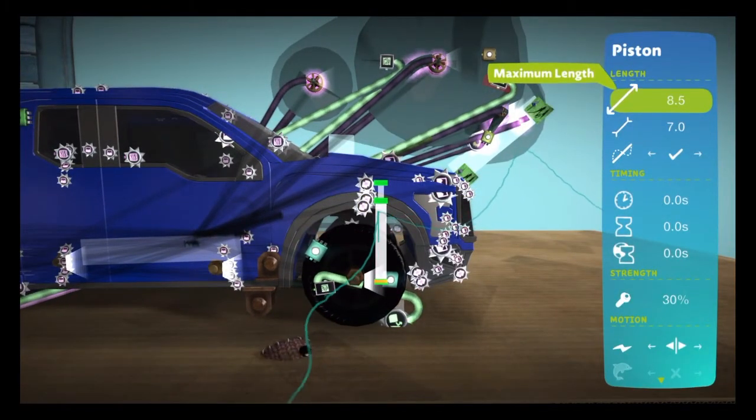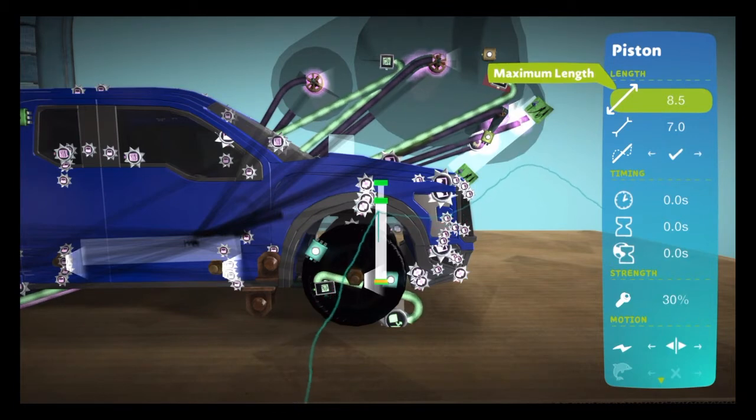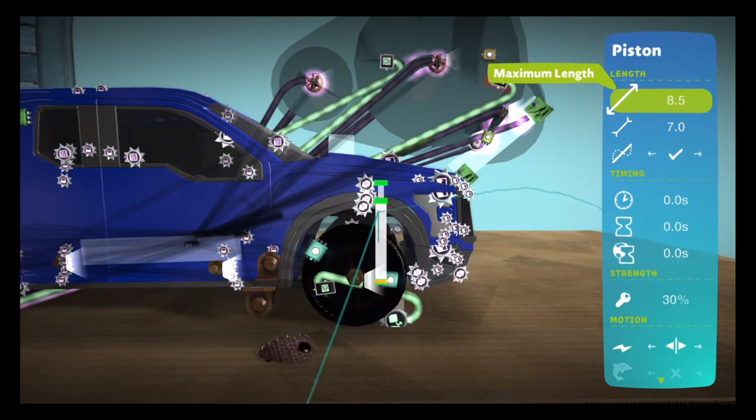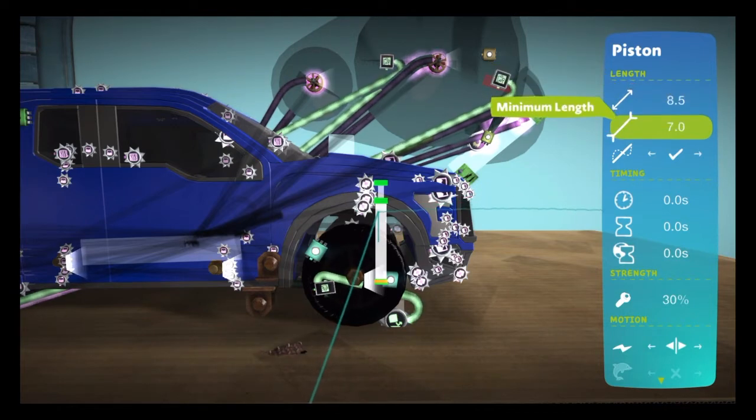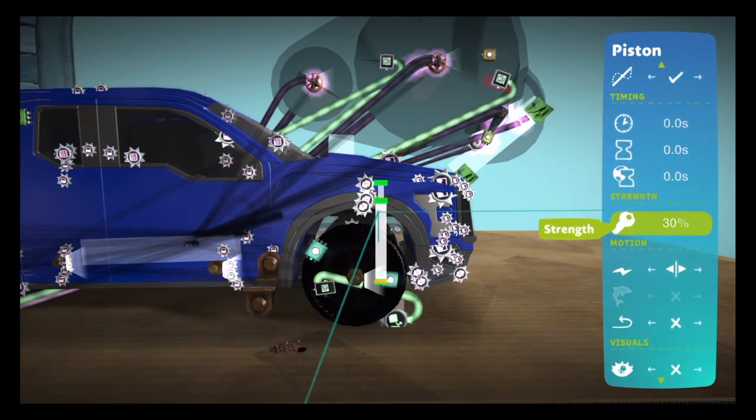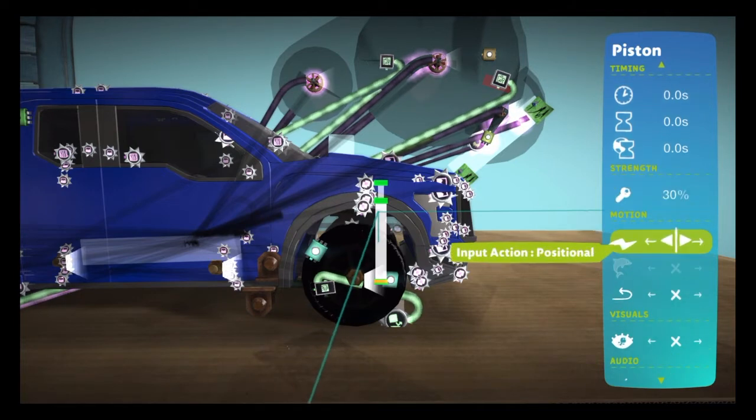So for your maximum length, you then want to set it to how far you want the wheels to drop down when the car is not touching the ground. And then obviously this is going to be your normal ride height. You want to make sure the piston's weak so then it doesn't take a really harsh landing.